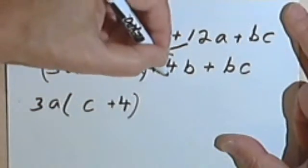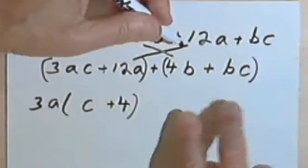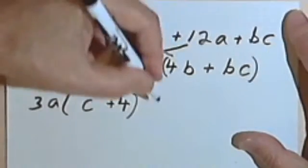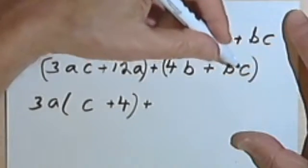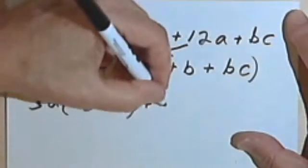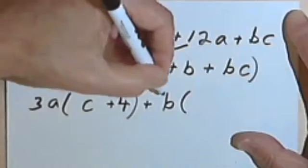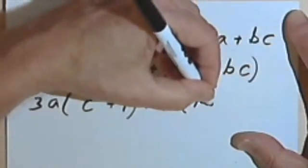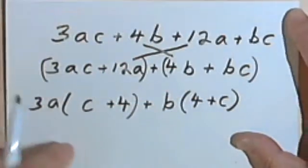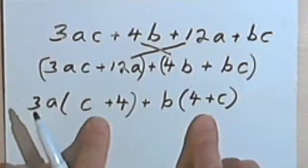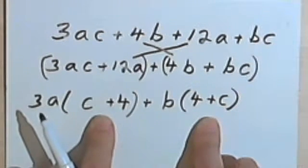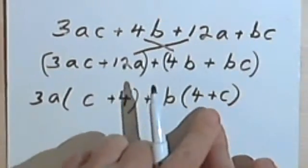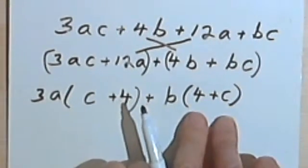Going on to the second pair of terms. I've got 4b plus bc. So I can factor a b out of this. And I get b times 4 plus c. Now these don't look exactly the same, but if you stop and think about these two binomials, they really are the same. All I have to do is change the order in one of the binomials.